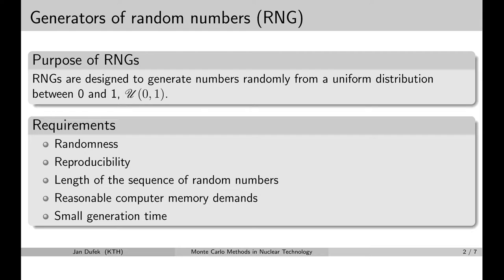There are some additional requirements that we have on random number generators. First of all, the random numbers should appear to be random — that is the first requirement: randomness. The requirement of randomness means that the numbers in the sequence that the generator gives us are not correlated with each other, so they should appear to be random.